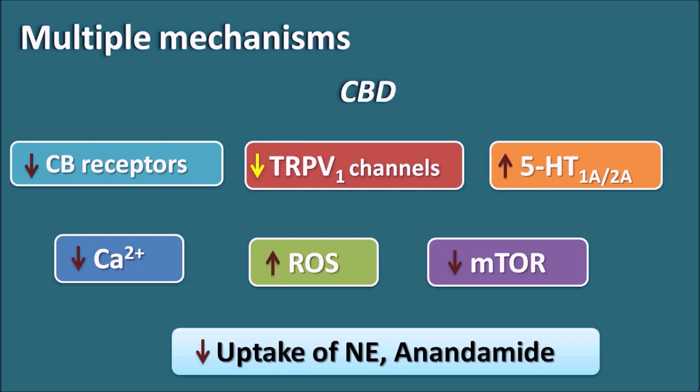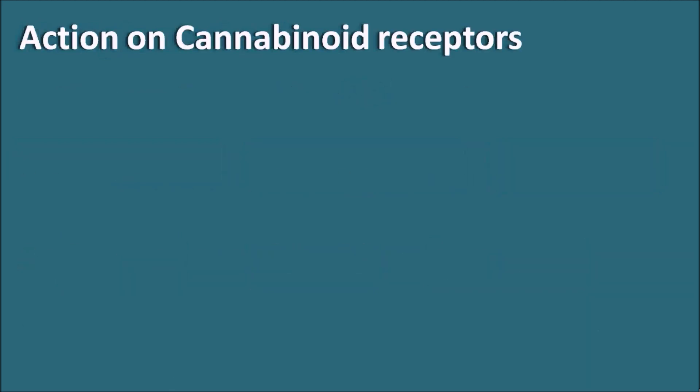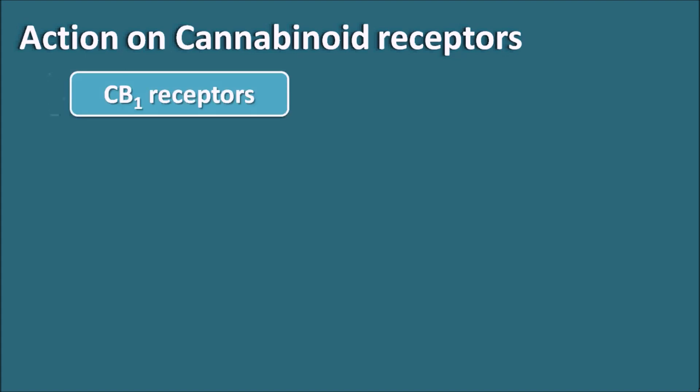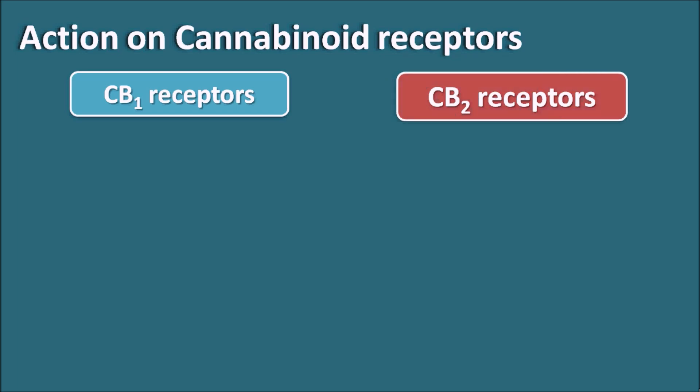Cannabidiol has multiple targets and thereby shows multiple pharmacological actions. One of its important actions is on the cannabinoid receptors. There are two types of cannabinoid receptors: CB1 receptors and CB2 receptors. CB1 receptors are mainly present in the central neurons as well as peripheral neurons and are responsible for neuronal excitation.